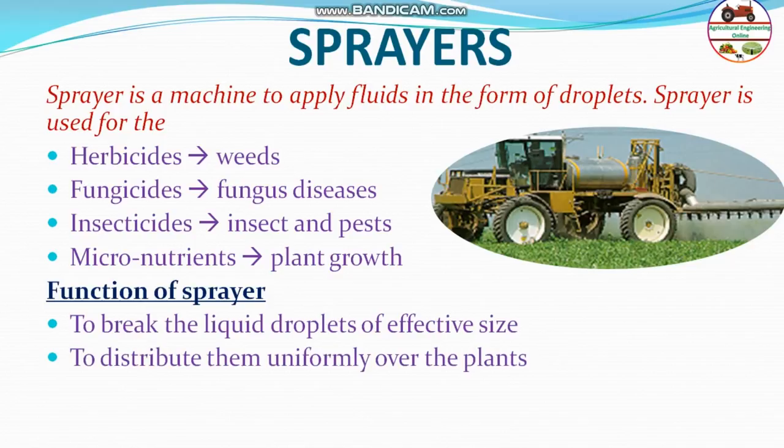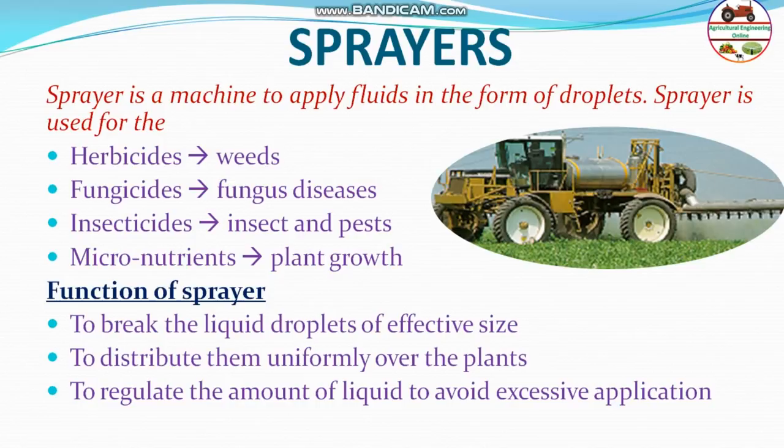The sprayer also distributes droplets uniformly over all the plants, and regulates the amount of liquid to avoid excess application. Excessive application leads to soil pollution and loss of chemical, which is also costly. Therefore, it regulates the amount of liquid, since different crops require different amounts of chemicals to be applied.